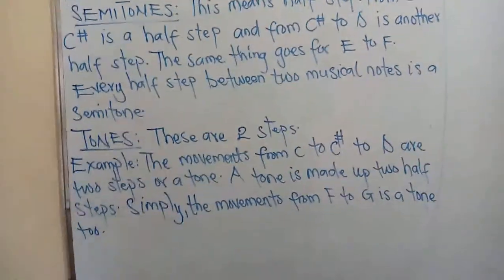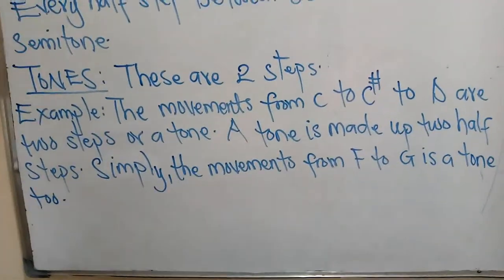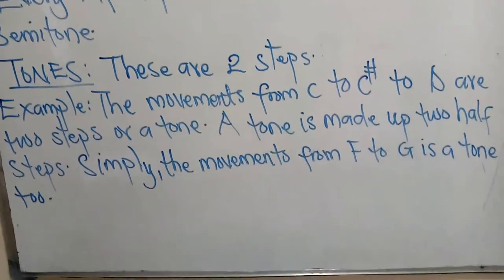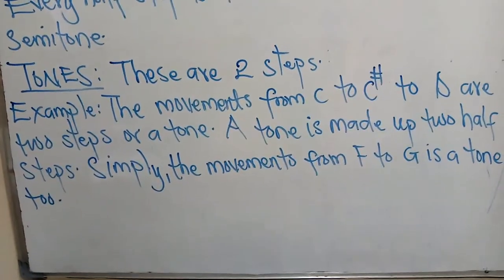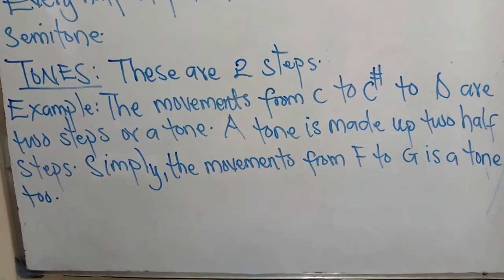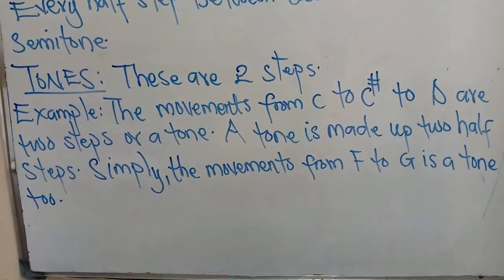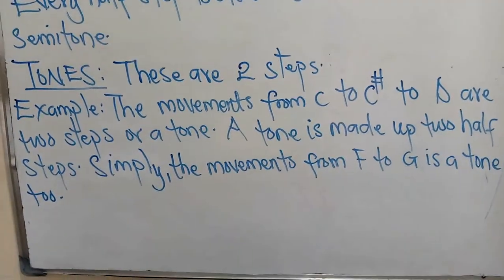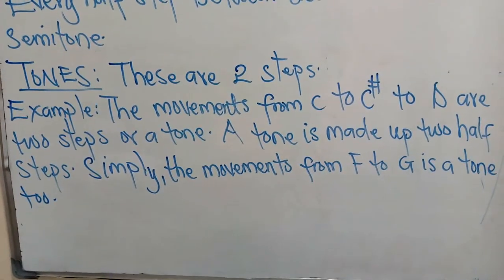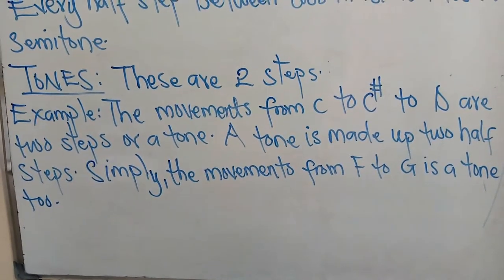Now we take the next one — tones. These are two steps. A tone is a movement of two half steps; that is, two half steps give us one tone. For example, the movement from C to C sharp to D is two steps, or a tone.